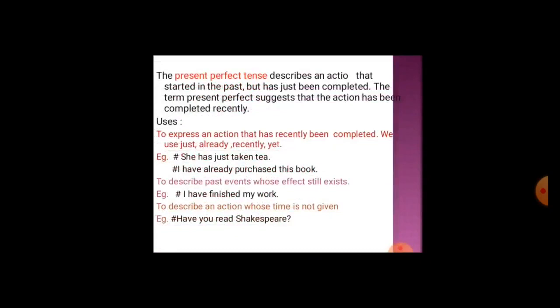Now present perfect tense. Present perfect tense describes an action that started in the past but has just been completed. It is used to express an action recently completed, often with words like 'just', 'already', 'recently', or 'yet'. For example: she has just taken tea; I have already purchased this book — the action has recently been completed.